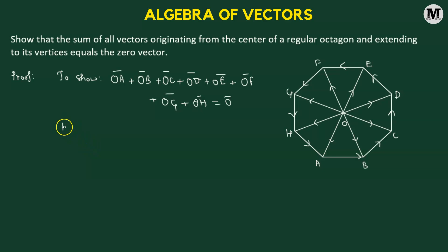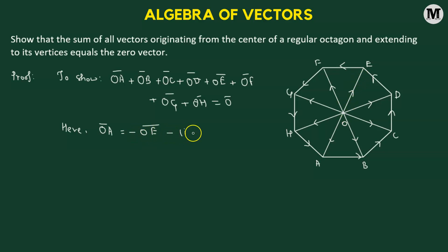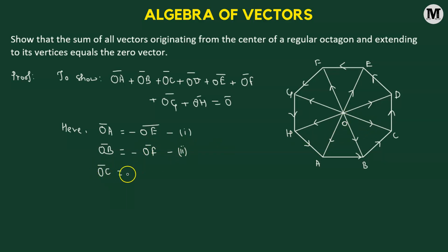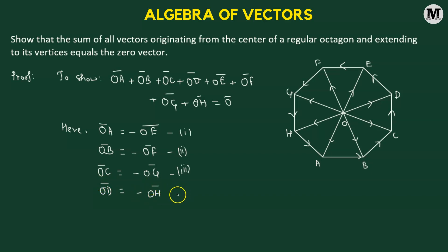Because of the symmetry of the problem, vector OA equals the negative of vector OE — they have equal magnitude but opposite directions. Call this equation (1). Similarly, OB equals negative of OF — equation (2). OC equals negative of OG — equation (3). And OD equals negative of OH — equation (4).